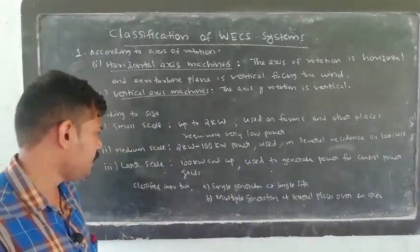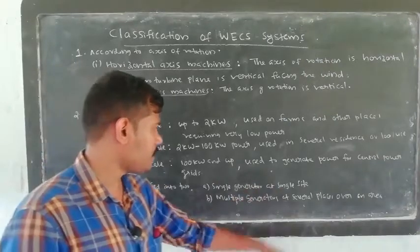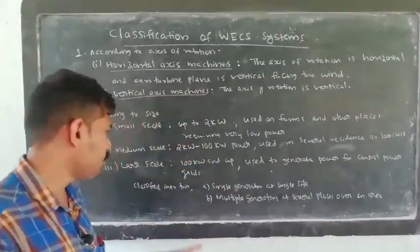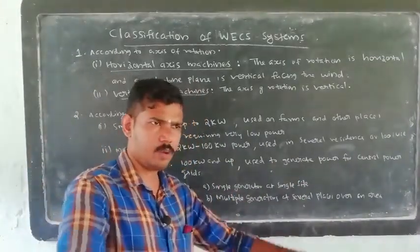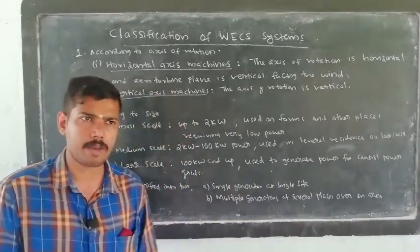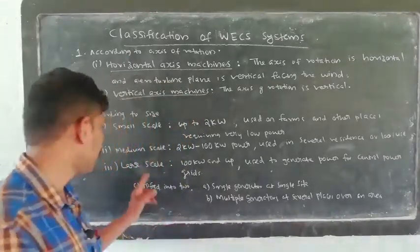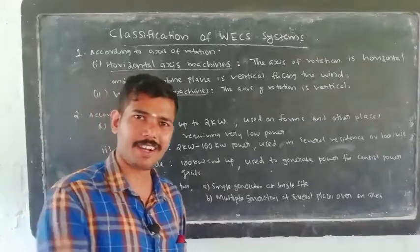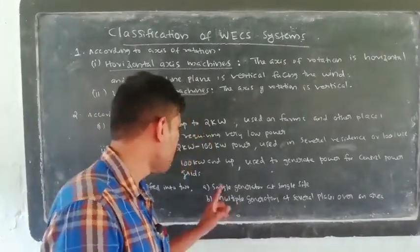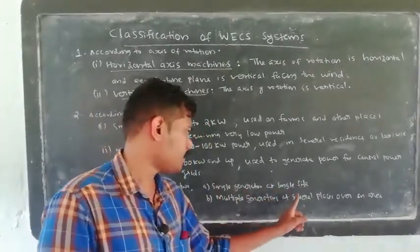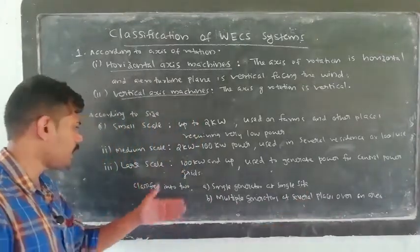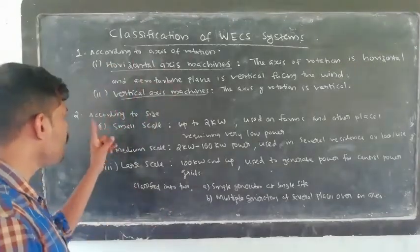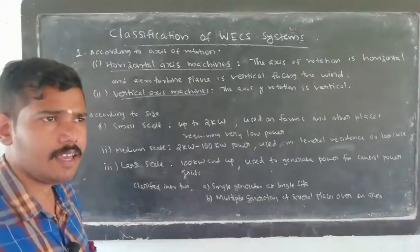We will again subdivide large scale systems. There is a single generator at a single site, and there are also multiple generators at several places over an area — that is also large scale. So, the classification types we have so far are: according to axis of rotation and according to size.